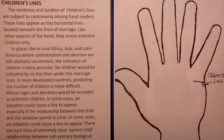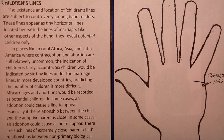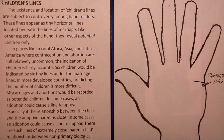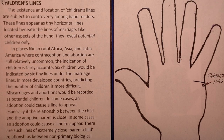So if you want children, it seems like when the desire is strong enough, then we start seeing a line appear. Maybe you have one child and you want more, and then the potential starts to appear. Remember, they are potential, meaning that it could happen. In places like rural Africa, Asia, and Latin America, where contraception and abortion are still relatively uncommon, the indication of children is fairly accurate. Six children would be indicated by six tiny lines under the marriage lines.